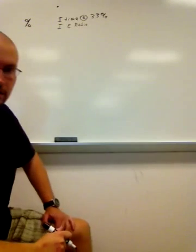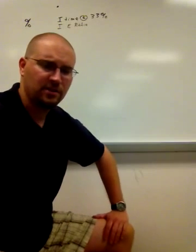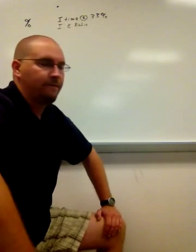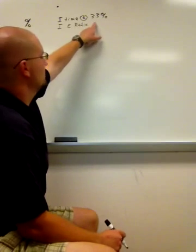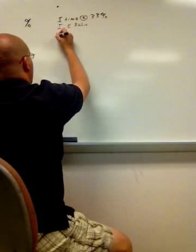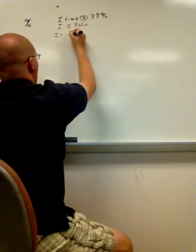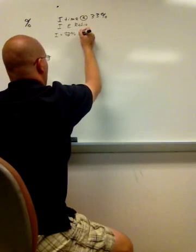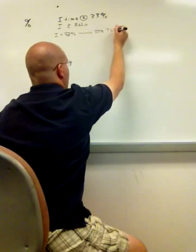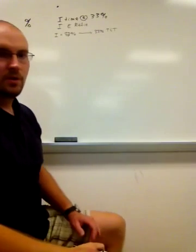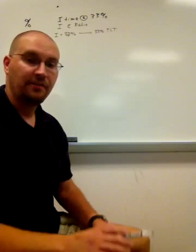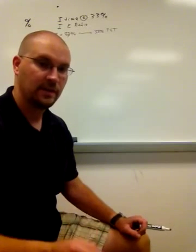I think this really throws a lot of people for a loop because they don't have an intuitive grasp of what is going on here. So the first question we have to ask is, what is this 33% referring to? The 33%, the I time equaling 33%, is talking about 33% of the total cycle time. It's asking us to set our inspiratory time to 33% of our total cycle time.